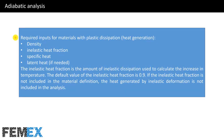Required inputs for materials with plastic dissipation which causes heat generation are: density, inelastic heat fraction, specific heat, and latent heat if needed. The inelastic heat fraction is the amount of inelastic dissipation used to calculate the increase in temperature. The default value is 0.9. If the inelastic heat fraction is not included in the material definition, the heat generated by inelastic deformation is not included in the analysis.